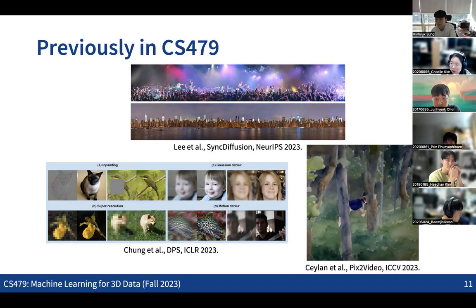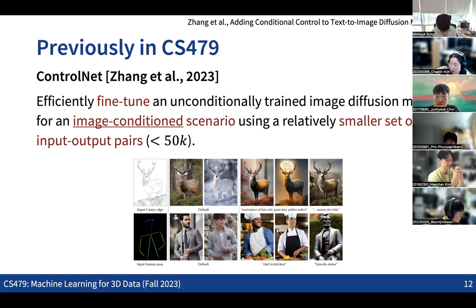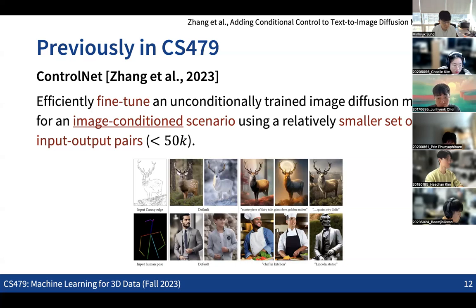We also briefly discussed the idea of ControlNet. ControlNet is different from the zero-shot case — when you have new input-output image pairs, making a conditional setup. How can we efficiently fine-tune an unconditional pre-trained diffusion model to adapt it to specific conditional scenarios? For example, with Stable Diffusion trained on more than 5 billion images, we can adapt it to a sketch-to-color-image generation setup.